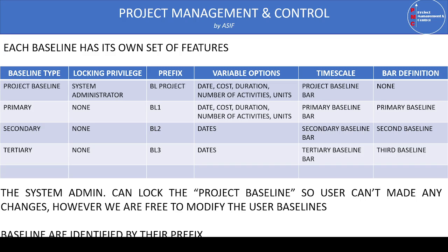If you assign a project as a secondary or tertiary baseline and go to the column bar, you will find only the baseline secondary or tertiary dates. But for the primary and project baseline, you can find columns for date, cost, duration, number of activities, and units. This is the major difference between the project and primary baseline compared to the secondary and tertiary baseline.